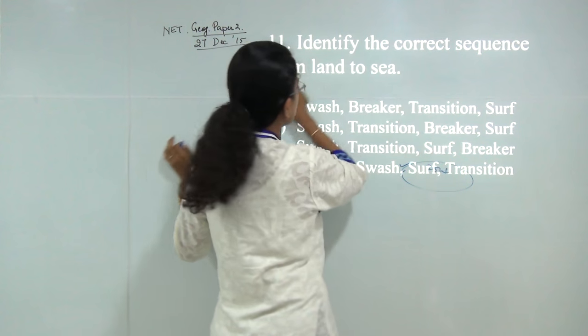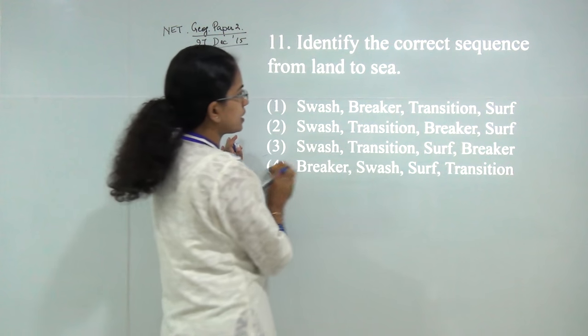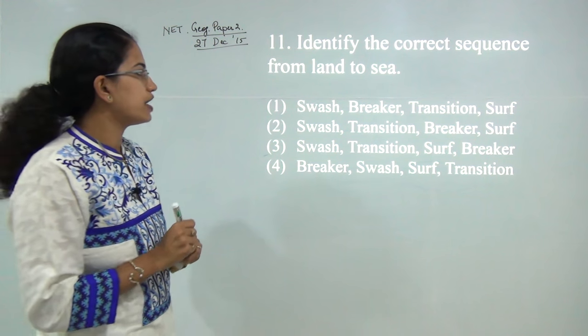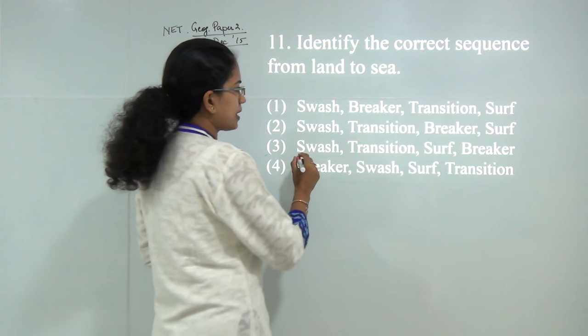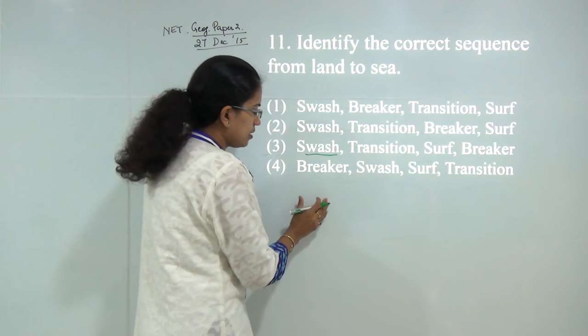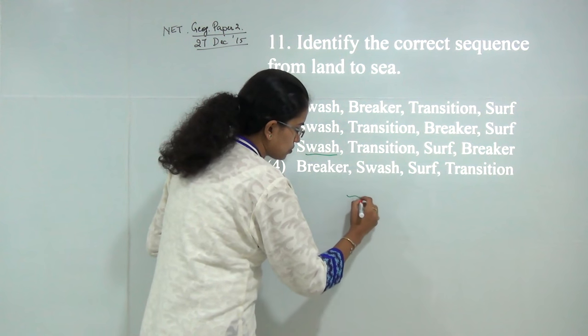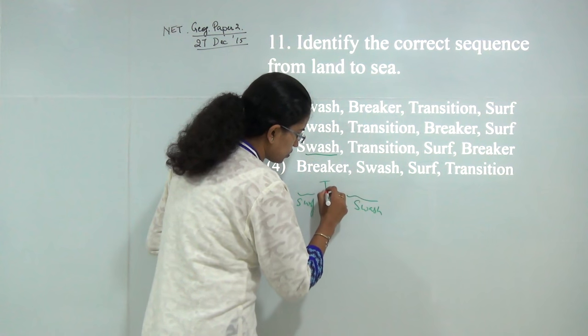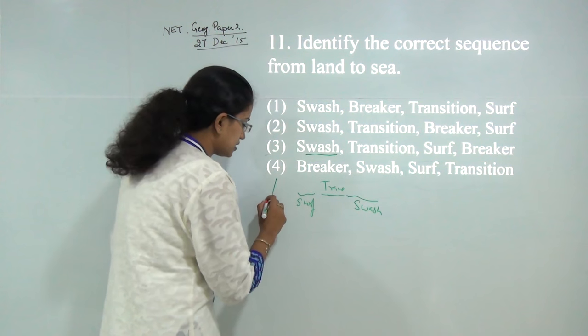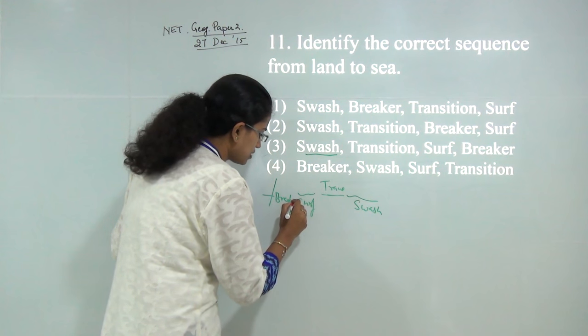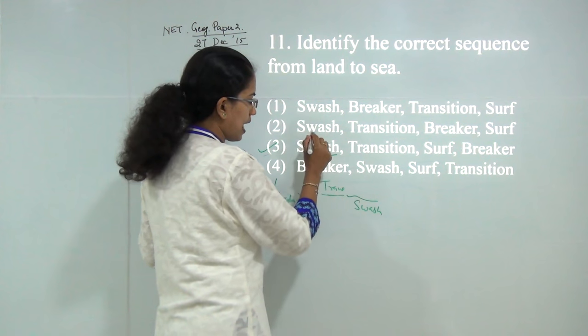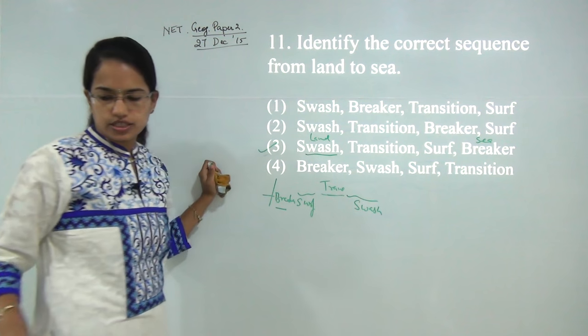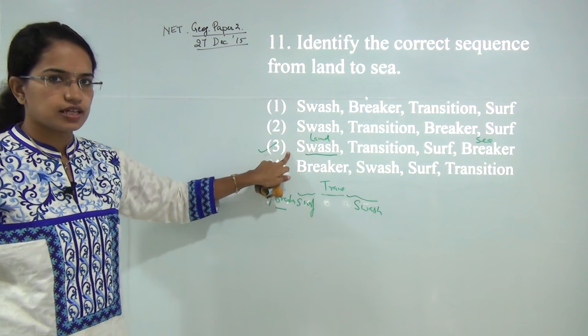Next: identify the correct sequence from land to sea. It's important to note the sequence is from land to sea. Starting with land, you have swash towards the land. Between the swash and surf is the transition zone, and the point where the wave breaks is the breaker, towards the sea. The correct answer from land to sea would be: swash, transition, surf, and breaker. The correct choice is 3. This was covered in the class on oceanography.